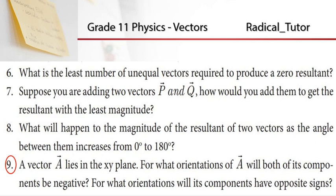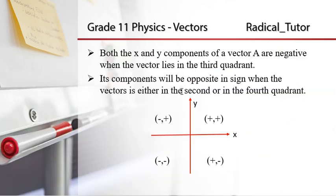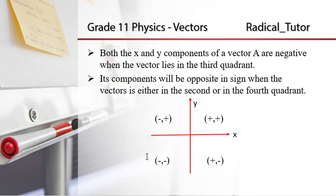For what orientations will its components have opposite signs? So x positive and y negative, or x negative and y positive. This is our xy-plane, this is our coordinate system. First quadrant, second quadrant, third quadrant — now for both components to be negative, the vector lies in the third quadrant.